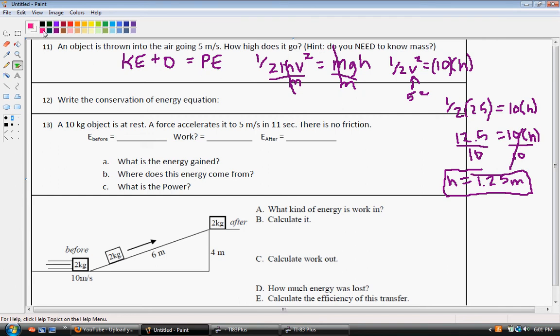Alright, 12 says write the conservation energy equation. Well, that's easy, we just did that, but we want the general equation. It's the energy before, there we go, plus or minus work if we have any, equals the total amount of energy after.